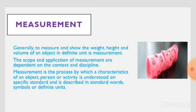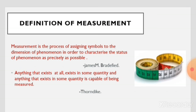Let me explain what measurement is. Generally, to measure and show the weight, height and volume of an object in a definite unit is measurement. Measurement is the process by which characteristics of an object, person or activity is understood on a specific standard and described in a standard word, symbol or definite unit.